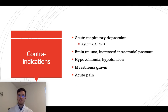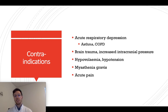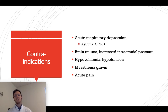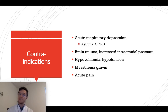There are contraindications against the use of fentanyl. Do not use it when the patient has acute respiratory depression, asthma, or COPD; following brain trauma or increased intracranial pressure; in cases of hypovolemia or hypotension; when the patient has myasthenia gravis; or for any acute pain, since fentanyl is only suitable for breakthrough pain.